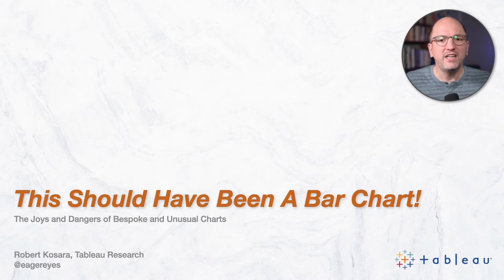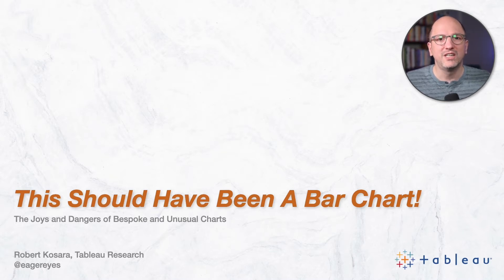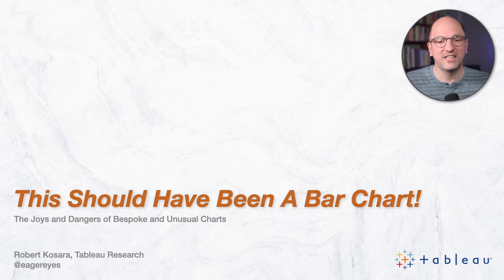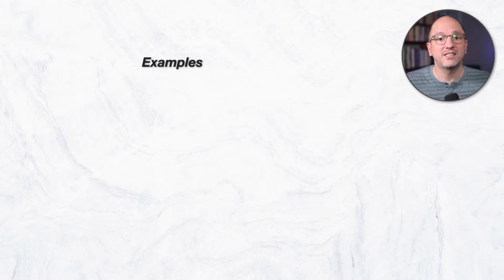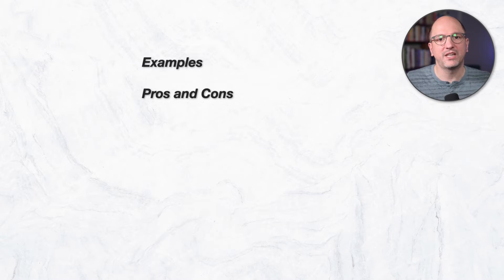Why is that? And why is it that at the same time, some of the most famous visualization examples from the history of visual data representation are unusual and not things you'd ever actually use to show data today? I'm Robert Kosara, a lead research scientist at Tableau Research. I'm interested in how people communicate about data using visual representations and how we read and understand charts. In this talk, I want to look at some unusual charts and discuss how they can be a good idea and what pitfalls there might be. I think it all really comes down to the purpose and the intent behind the chart.